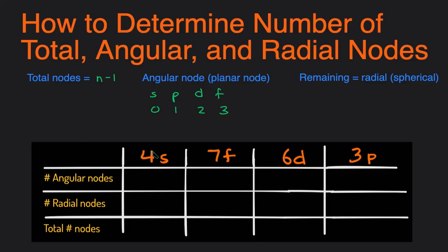We have 4S. Let's start by determining the total number of nodes. So the energy level here is 4. 4 minus 1 will be 3, so the total number would be 3. Then the number of angular nodes, we just take a look at the subshell. It's S, and S will have zero angular nodes, so that means the number of radial nodes would have to be 3, because 3 minus 0 is 3.